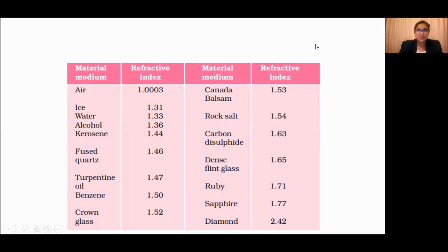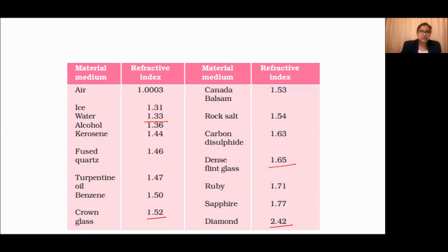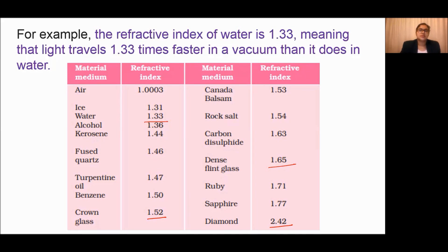The refractive indices of several media are shown in this table. As you can see, water has a refractive index of 1.33. Crown glass has 1.52, flint glass has 1.65, and diamond has 2.42. A refractive index of 1.33 for water means light travels 1.33 times faster in vacuum than in water. Similarly, the refractive index of diamond is 2.42, meaning light travels 2.42 times faster in vacuum than in diamond.